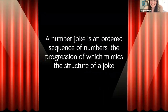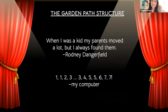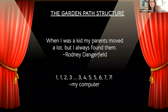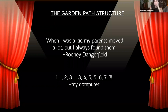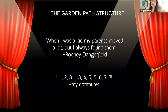A number joke is an ordered sequence of numbers, the progression of which mimics the structure of a joke. For example, here's a joke with a specific structure — it's called the garden path structure. This is by Rodney Dangerfield: 'When I was a kid, my parents moved a lot, but I always found them.' And here's a number joke that has that same structure: 1-1-2-3-3-4-5-5-6-7-7.